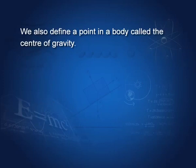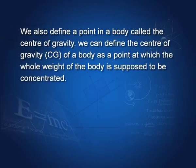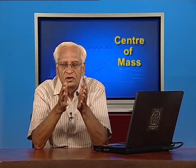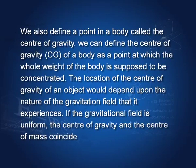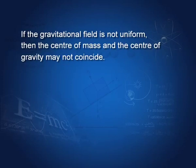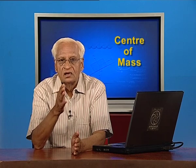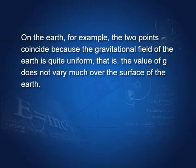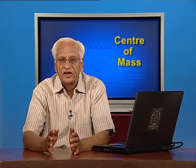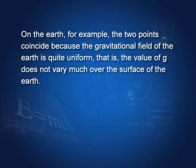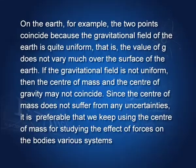We also define a point called the centre of gravity, which is defined as the point where the whole weight of the body is concentrated. Students usually find it difficult to relate these two points. For simplicity: if the gravitational field is uniform, then the centre of gravity and the centre of mass coincide. If the gravitational field is not uniform, they are not at the same point. On the earth's surface, the acceleration of gravity does not change much, so the field is effectively uniform, and the centre of mass and centre of gravity of objects coincide there.